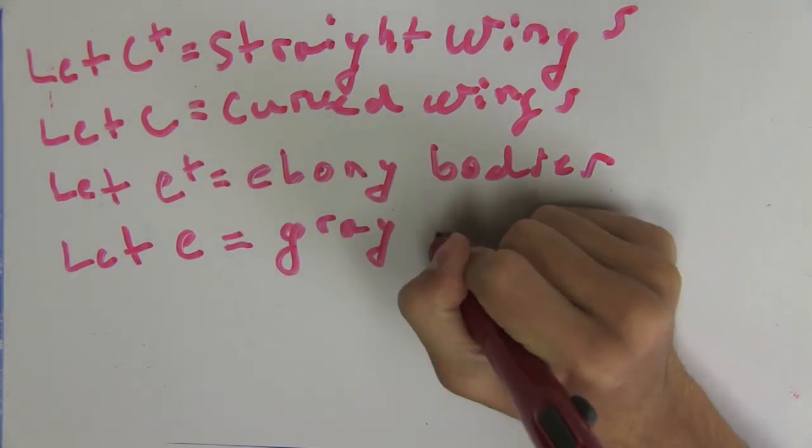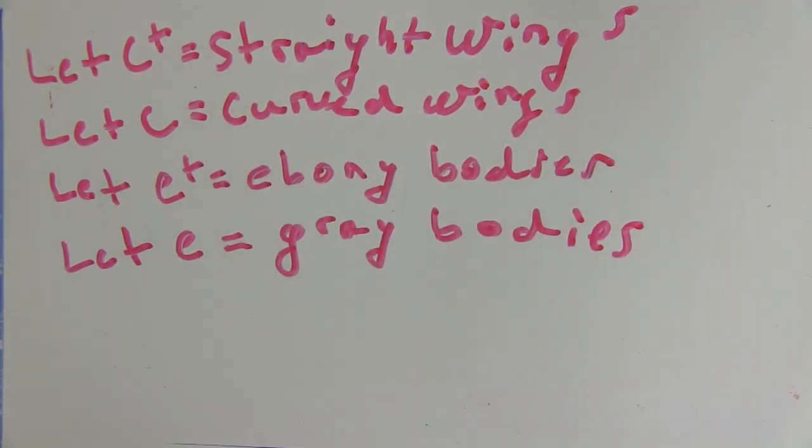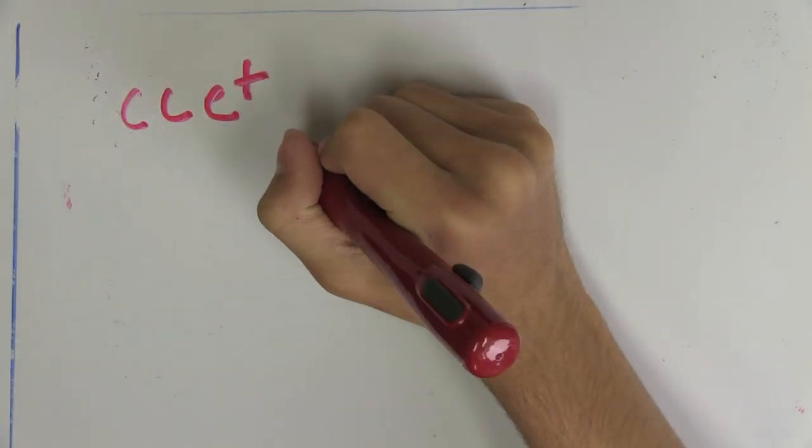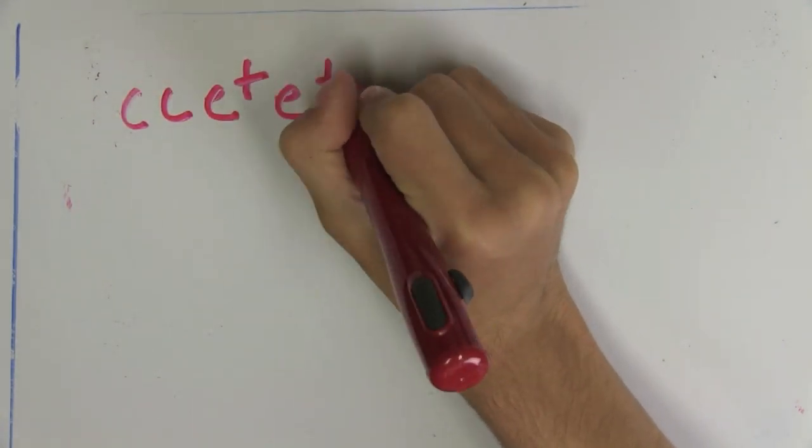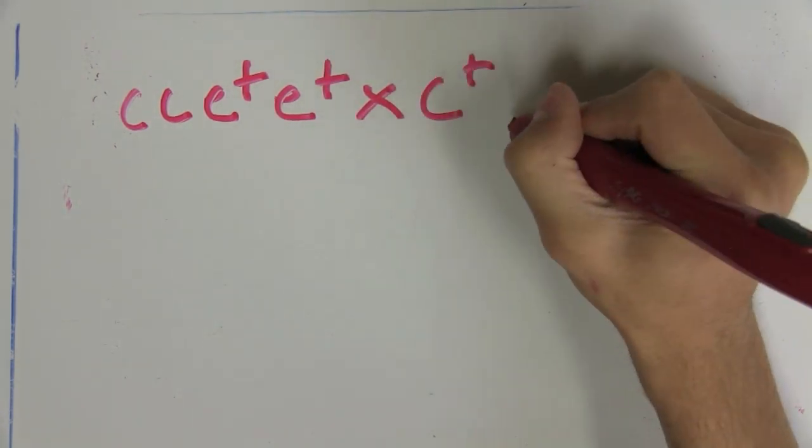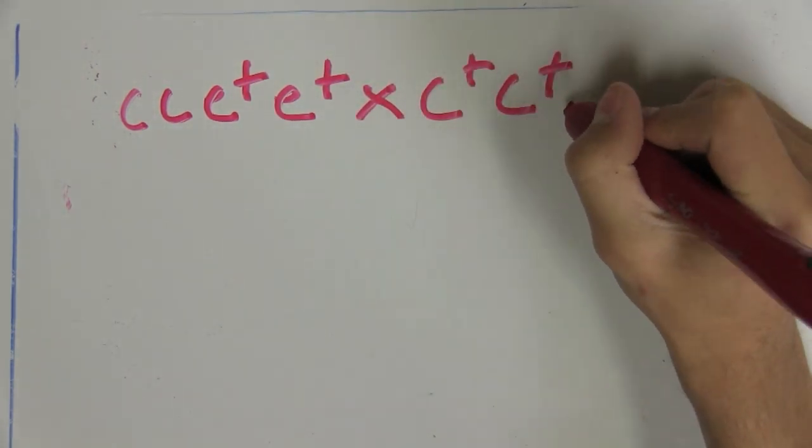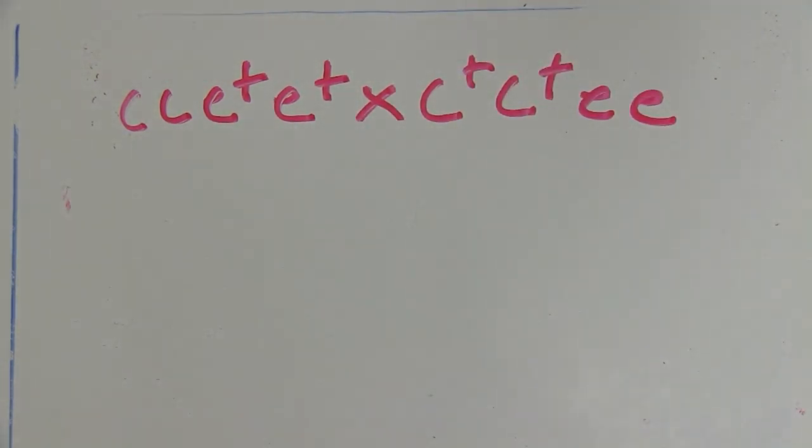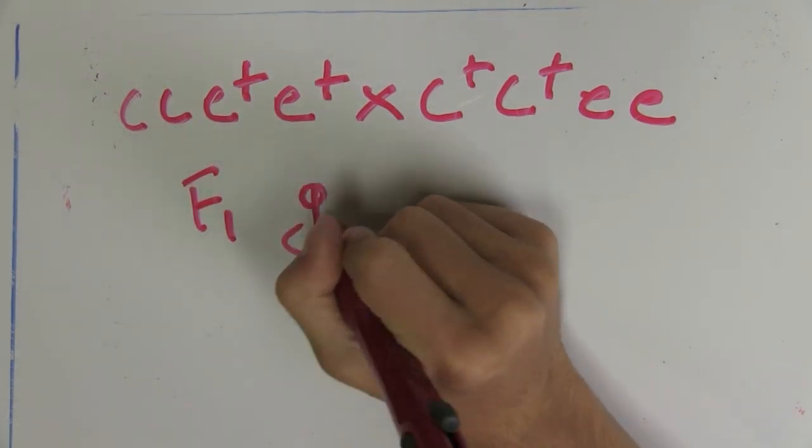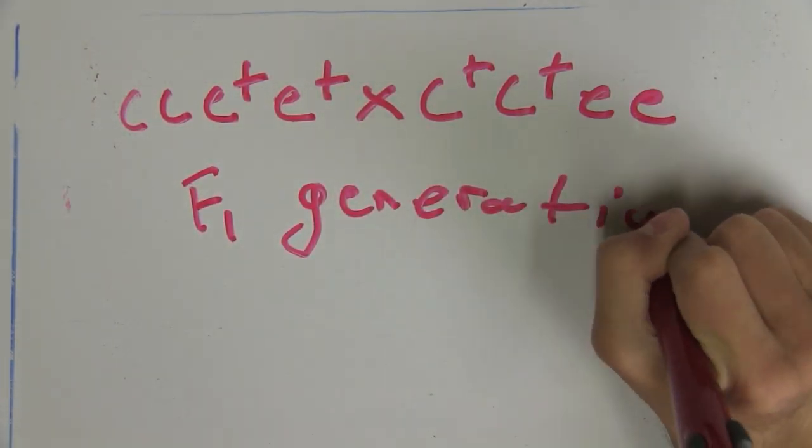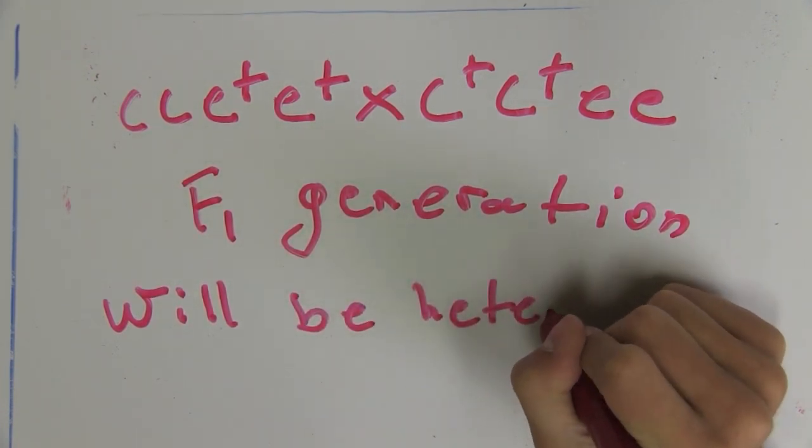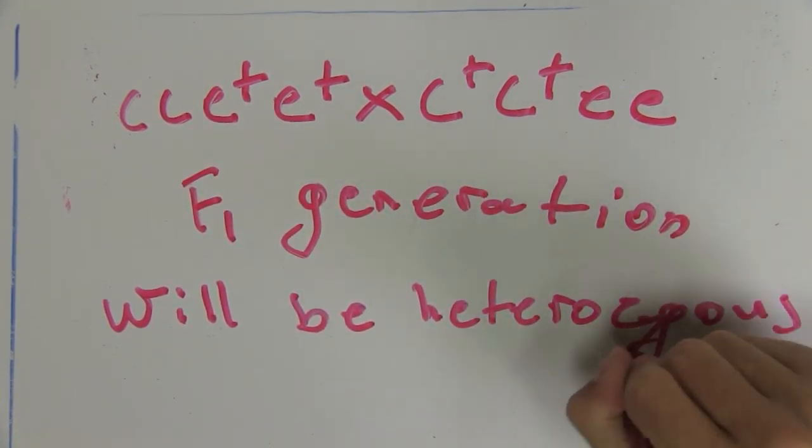So before we do any crosses, let's set forth this notation. I think now we're ready to do the parental cross where we're mating a fly with curved wings and gray bodies with a fly with straight wings and ebony bodies. We can figure out the genotypes by looking back at the problem, but I'm assuming you can already do that. If not, check out my other videos. So by mating these flies, we find that the F1 generation is heterozygous with normal wings and gray bodies.